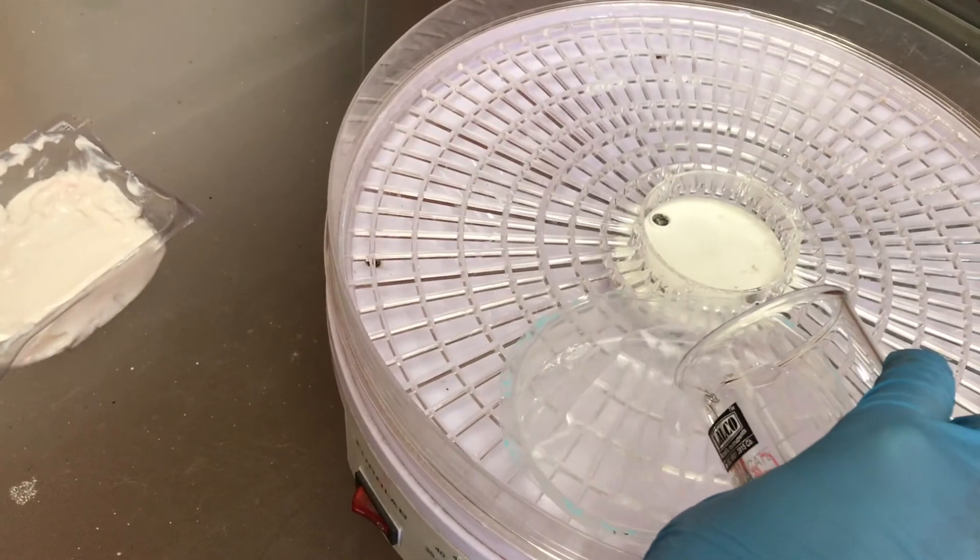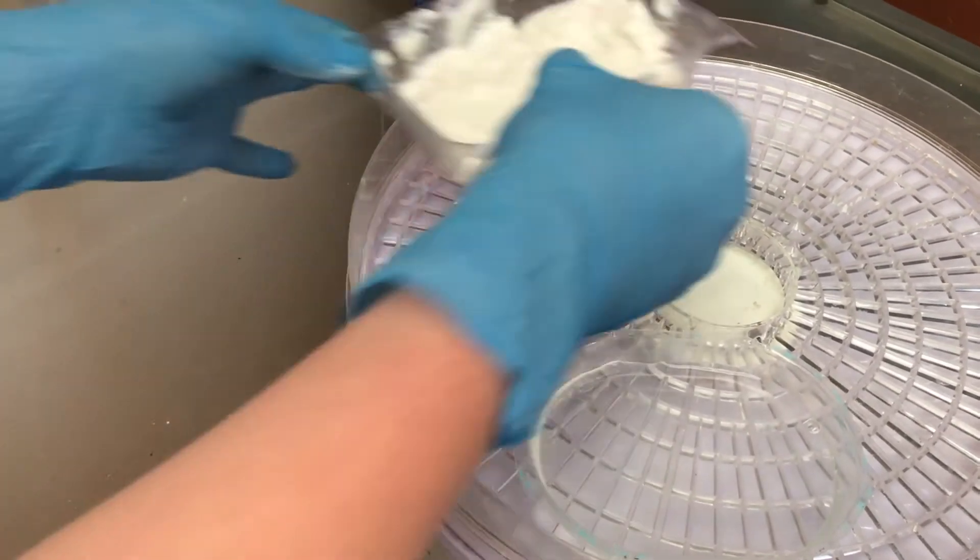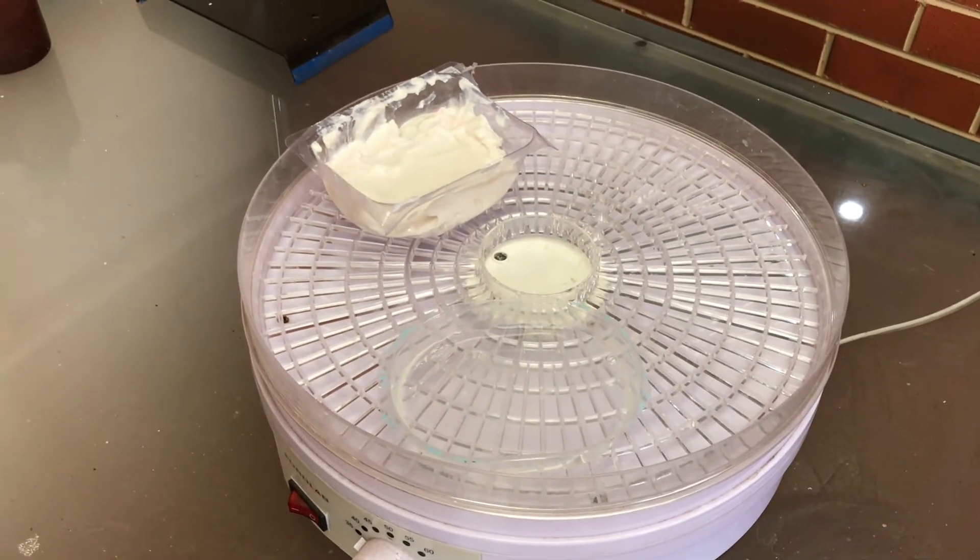I will now pour sodium acetate into a container to dry and crystallize. I will also replace the large container of calcium hydroxide to dry. Leave overnight.